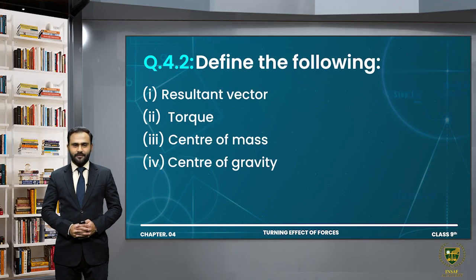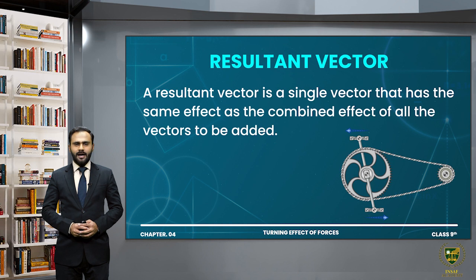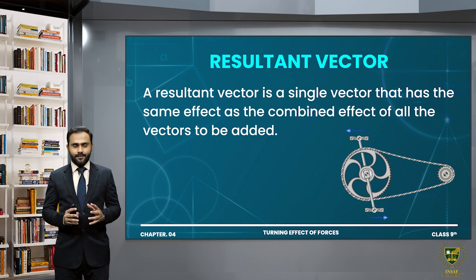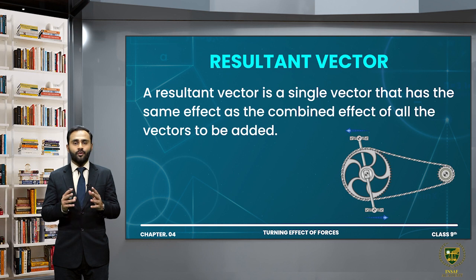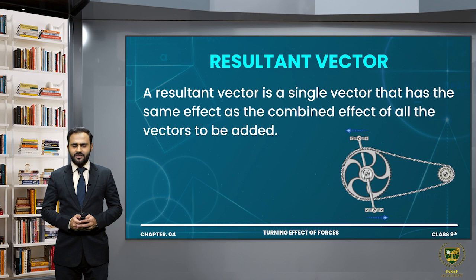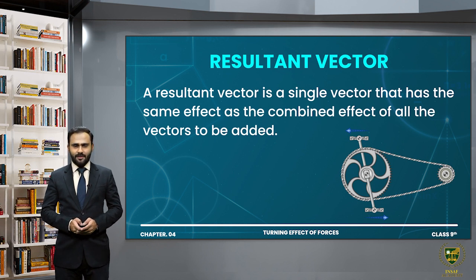Question number 4.2: Define the following — resultant vector, torque, center of mass, and center of gravity. First, defining resultant vector: a resultant vector is a single vector that has the same effect as the combined effect of all the forces to be added. It gives the magnitude and the direction of the resultant force.